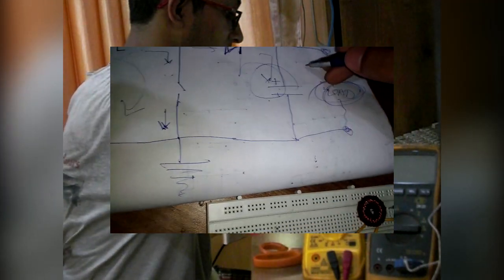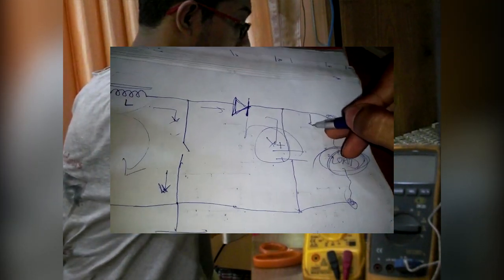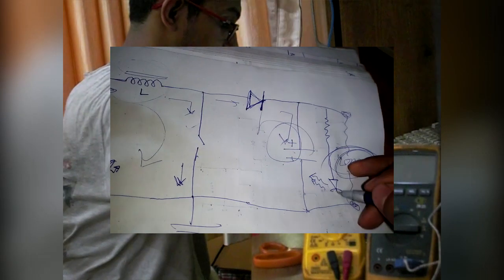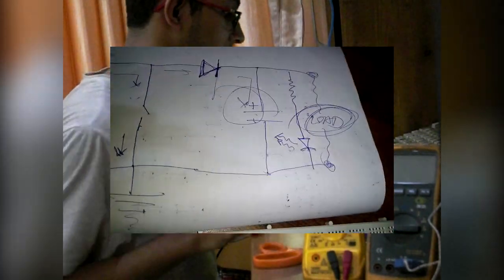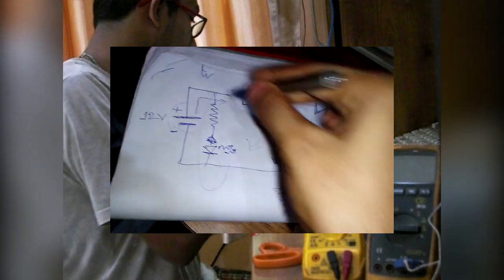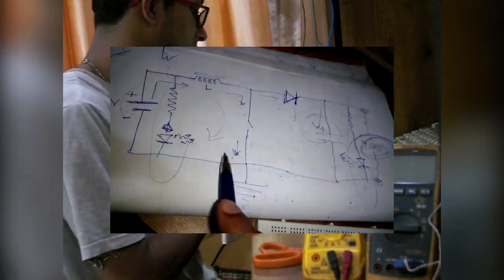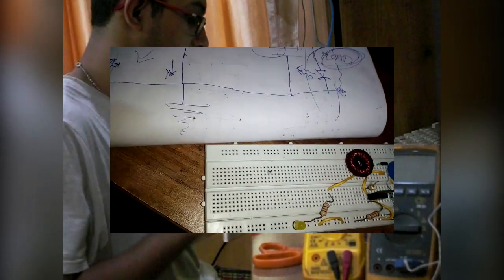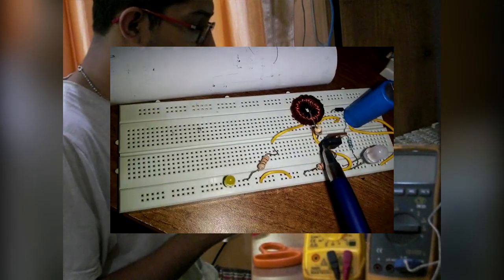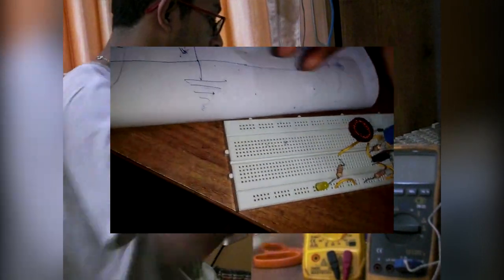At the output there is another LED. If you ignore these two LEDs, we have the classical boost converter circuit. Now let's look at how the MOSFET acts as the switch.